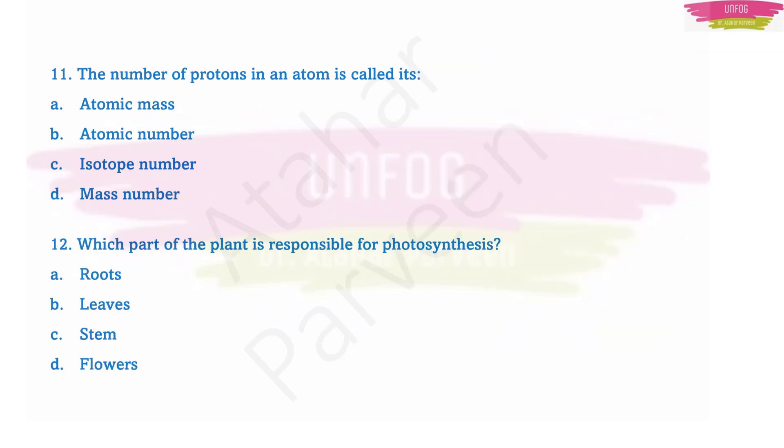Question number eleven: the number of protons in an atom is called its... Of course, the number of protons in an atom is called its atomic number. Question number twelve: which part of the plant is responsible for photosynthesis? See the options: roots, leaves, stem, flowers. Of course, the part of the plant which is responsible for photosynthesis is leaves, because they have chlorophyll. Using that chlorophyll, they are making food for that plant, and that process wherein the food is prepared for the plant in the presence of sunlight is known as photosynthesis.